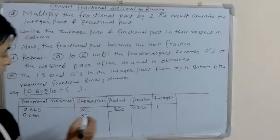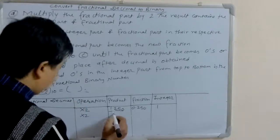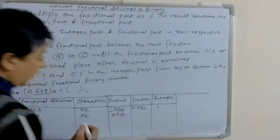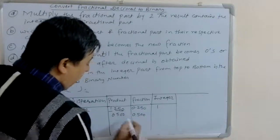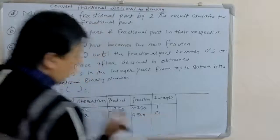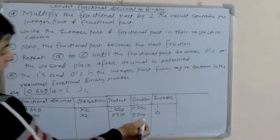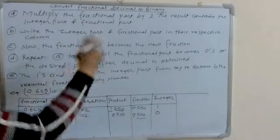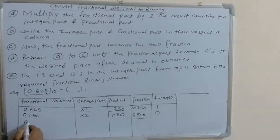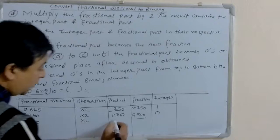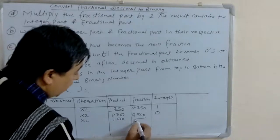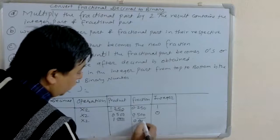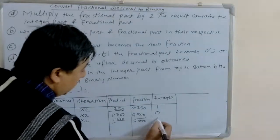0.250 again multiply by 2, the product is 0.500. The fractional part is 0.500 and the integer part is 0. Now this fractional part becomes the new fraction: 0.500 into 2 equals 1.000. The fractional part is 0.000 and the integer part is 1.